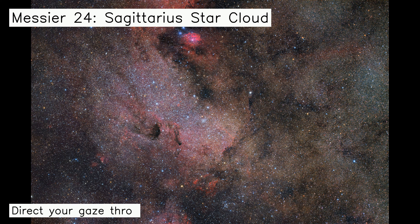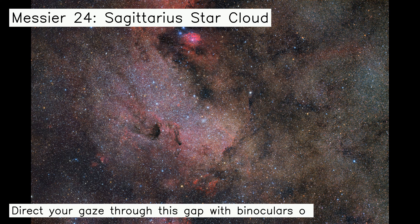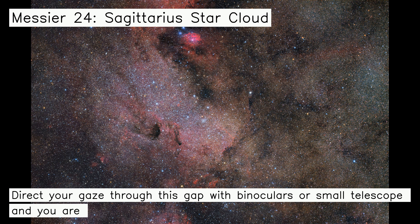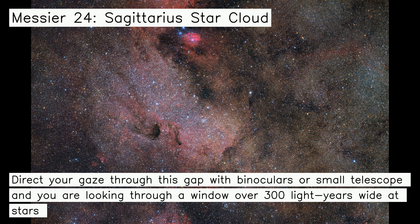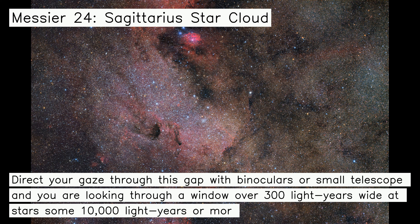Direct your gaze through this gap with binoculars or a small telescope and you are looking through a window over 300 light years wide at stars some 10,000 light years or more from Earth.